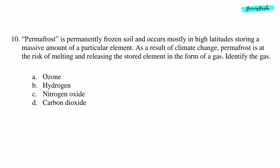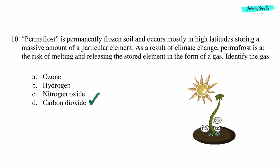Question 10: Permafrost is permanently frozen soil and occurs mostly in high latitudes, storing a massive amount of a particular element. As a result of climate change, permafrost is at the risk of melting and releasing the stored element in the form of a gas. Identify the gas. Option D: Carbon dioxide.